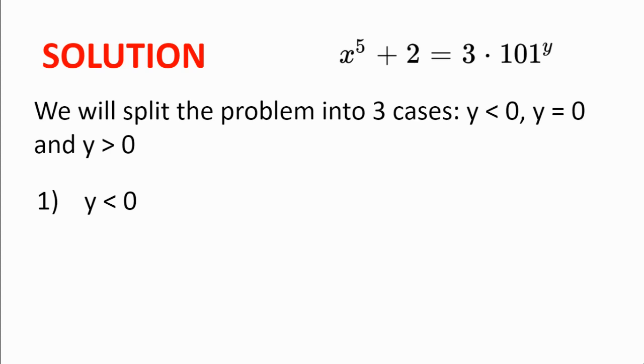And 3 multiplied by 101 to the power of y is also not an integer. So what we get is that the left hand side is an integer because x is an integer, but the right hand side is not. And so we get a contradiction. And so there are no solutions in this case.